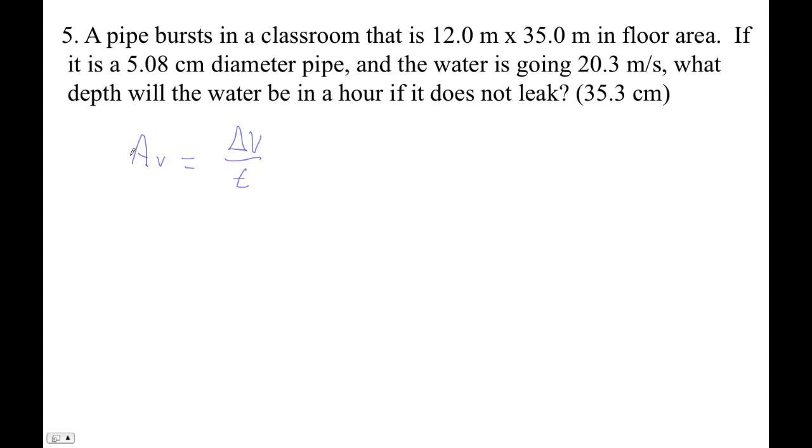So this is volume, that's time, that's area, that's velocity. And the idea is that if we've got a pipe and we've got a fluid flowing down the pipe at some velocity, that volume flow rate is the area of this times the velocity.